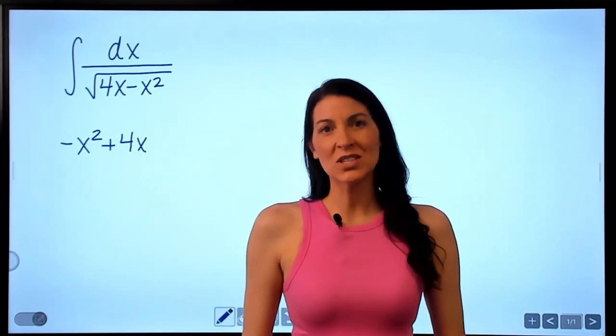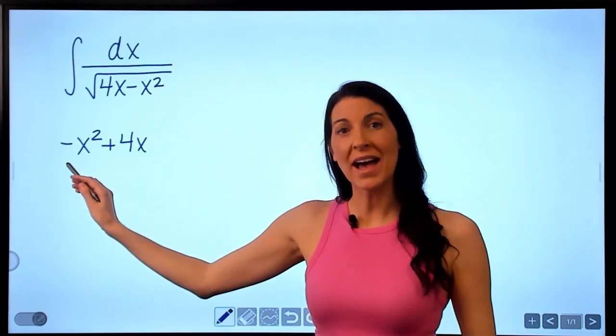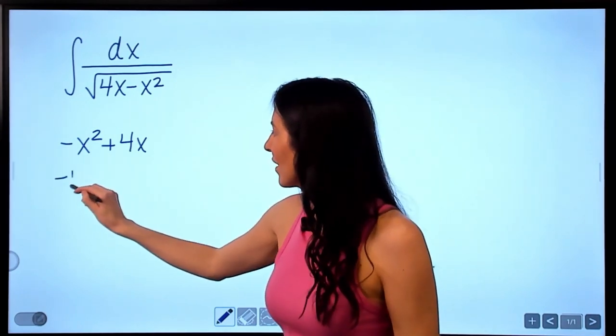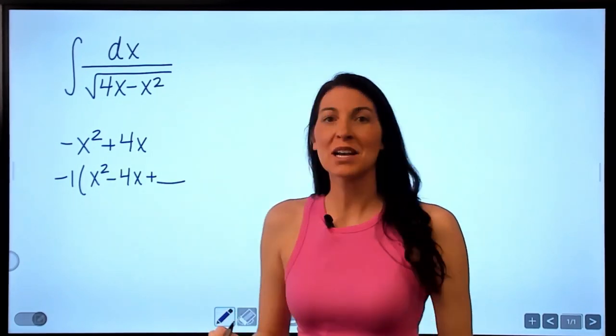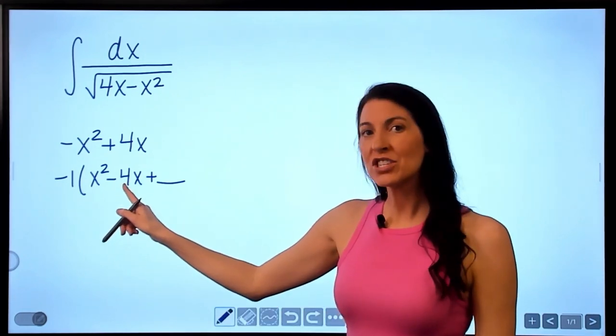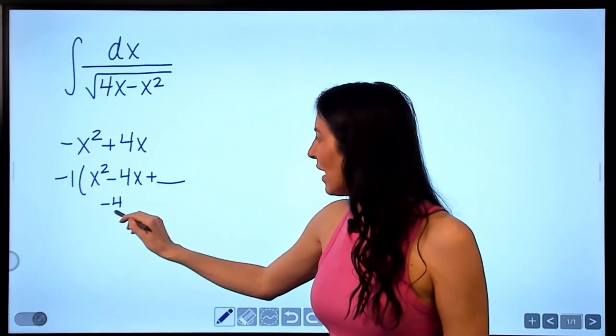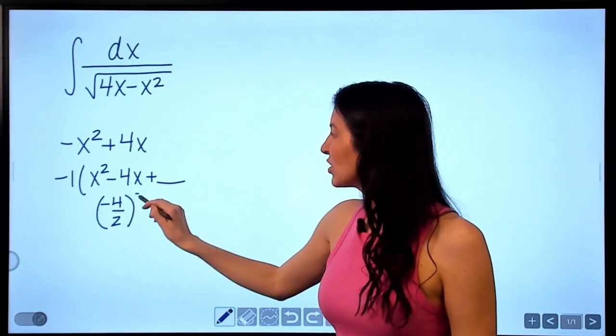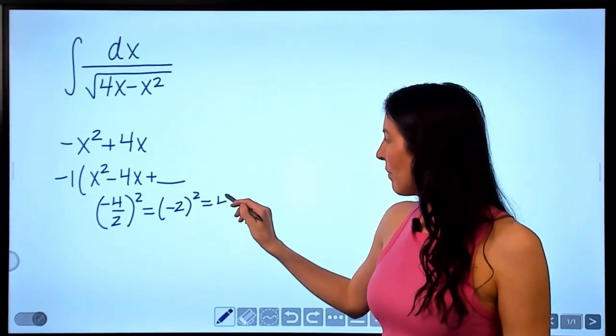Now in order to complete the square, the leading coefficient does have to be a positive 1. So I'm going to factor out the negative 1. Now I'm going to leave a space to complete the square. To complete the square, I take the coefficient of x, sometimes known as the b value, and I divide that by 2 and then square it. So that would give us negative 2 squared or positive 4.